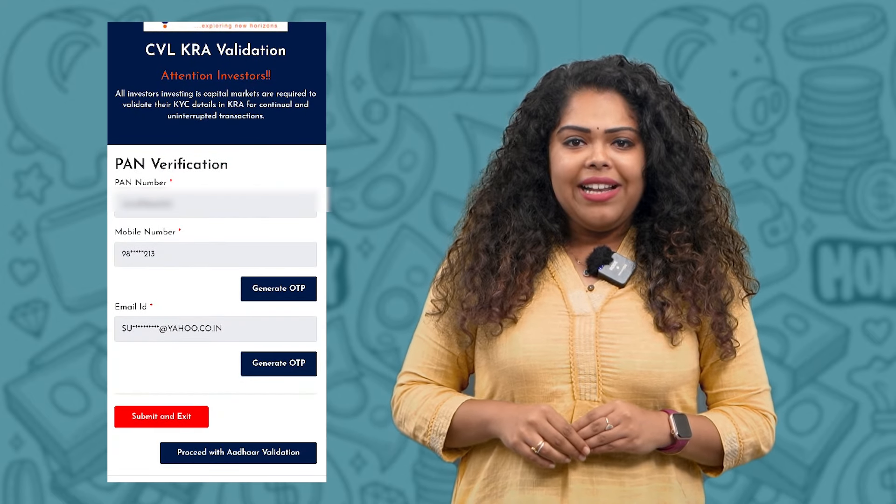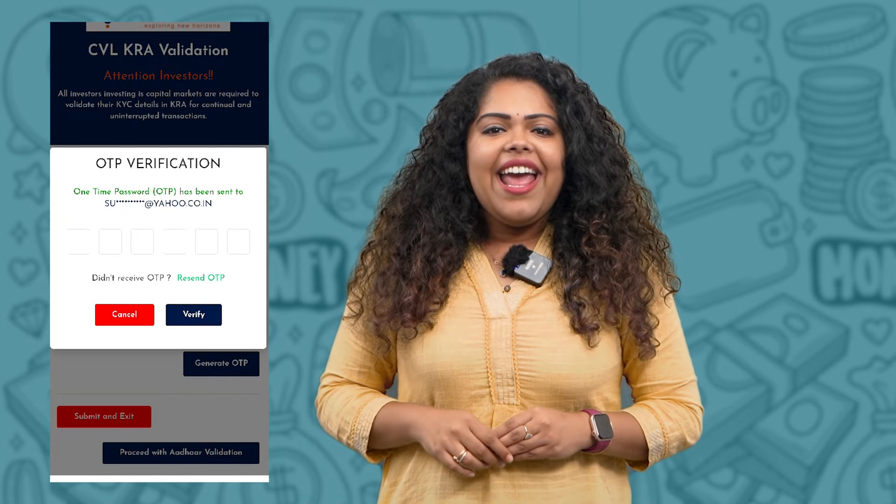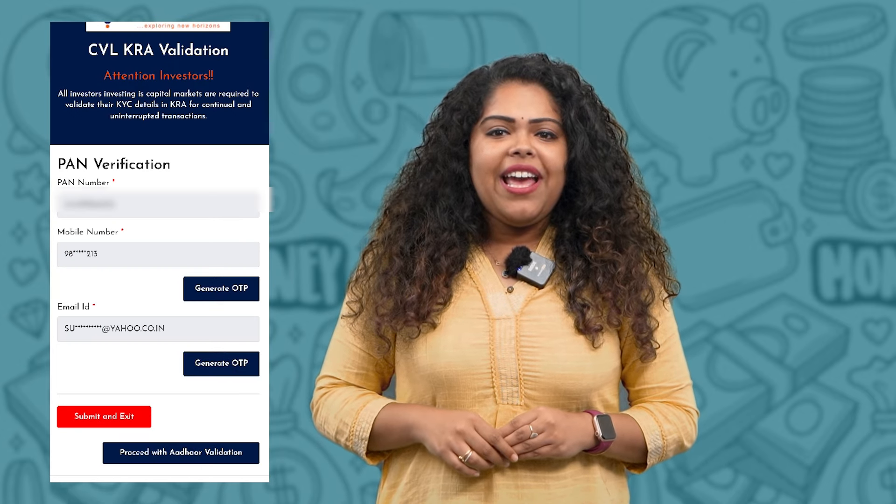Login to the respective KRA website — you can find links to all KRAs in the description below. Enter your PAN and click outside the box to retrieve your mobile number and email ID. Click on Generate OTP next to the mobile number and email ID fields, enter the OTP and verify.